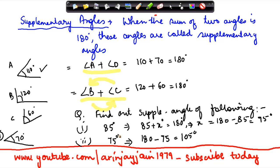So the supplementary of 75 is 105 and supplementary of 85 is 95 degrees. So that is the manner in which you compute your complementary and supplementary angles.